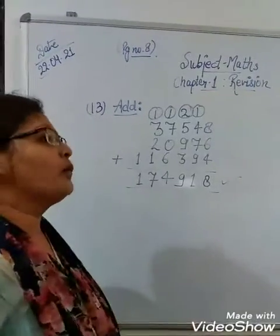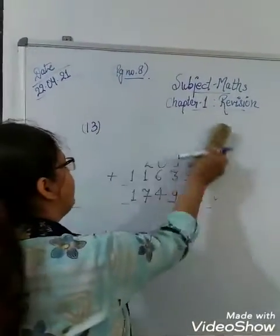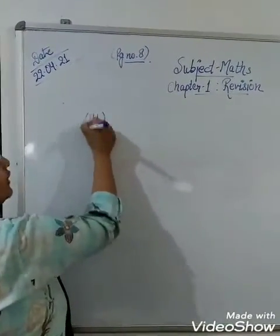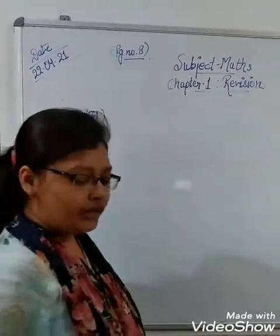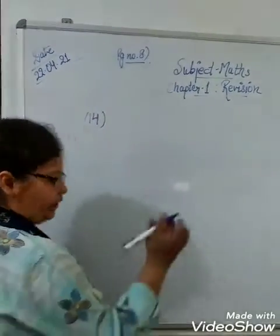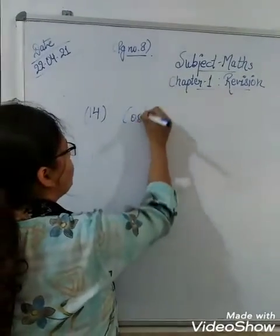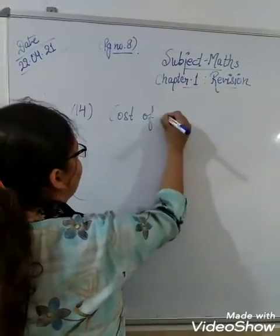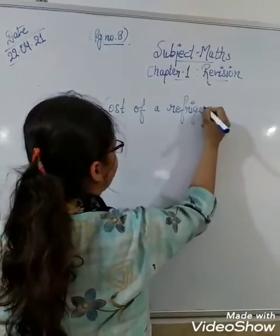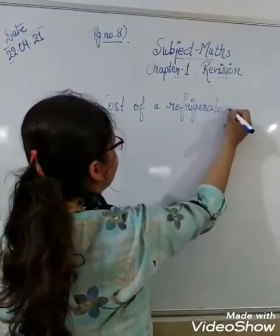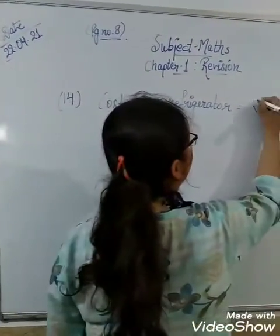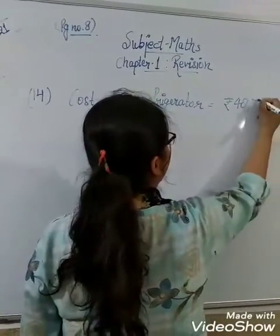Now let's move on to the word problem given for addition. That is question number 40. In the word problem they are asking the cost of a refrigerator is 48,748. So we can mention cost of a refrigerator equals Rs. 48,748.